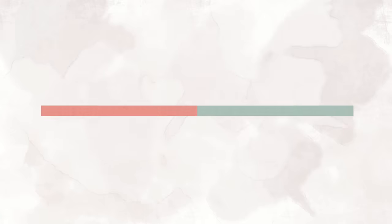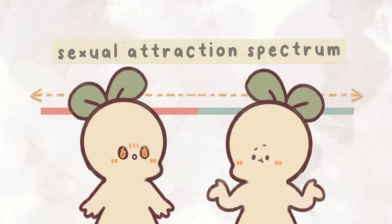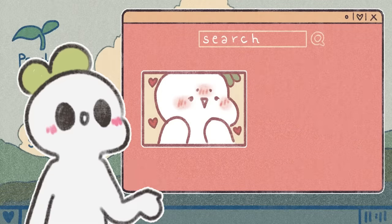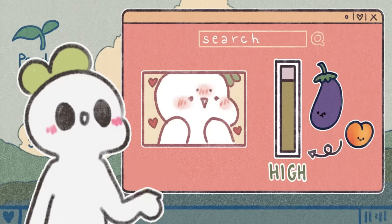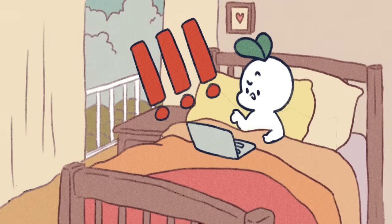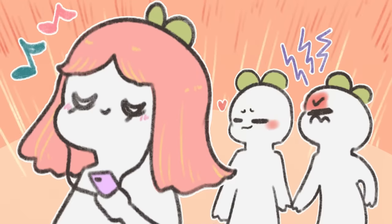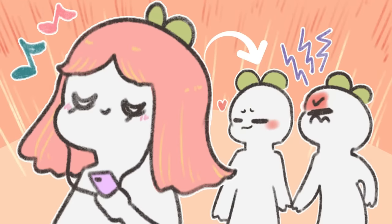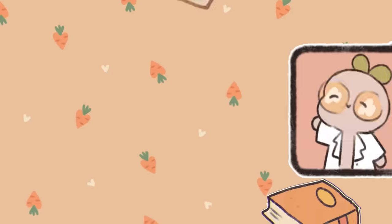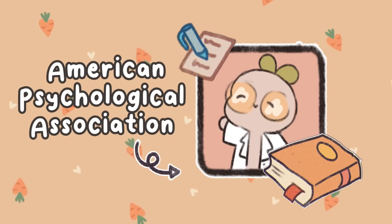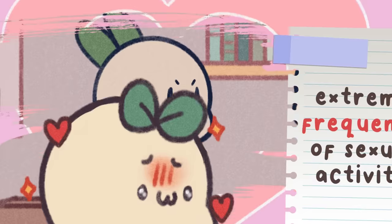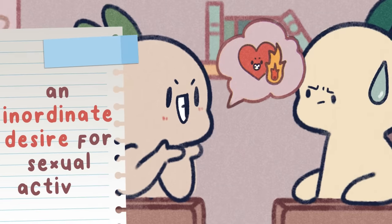Both conditions lie on opposite ends of the sexual attraction spectrum. The first sexual disorder is sexual hyperactivity, which means that individuals have an unusually high sex drive — higher than average. As defined by the American Psychological Association, sexual hyperactivity is extreme frequency of sexual activity or an inordinate desire for sexual activity.